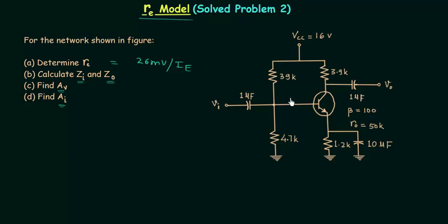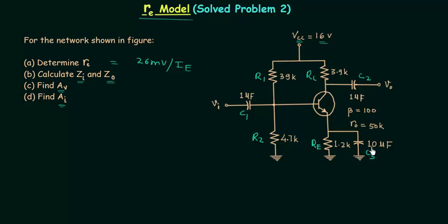This is the network. Vcc is equal to 16V. Resistance R1 is equal to 39kΩ, resistance R2 is equal to 4.7kΩ, resistance Rc is equal to 3.9kΩ, and resistance Re is equal to 1.2kΩ. Capacitor C1 is equal to 1μF, capacitor C2 is also equal to 1μF, and bypass capacitor C3 is equal to 10μF. β is equal to 100, and the output resistance RO in the Re model is equal to 50kΩ.